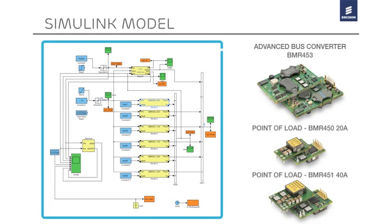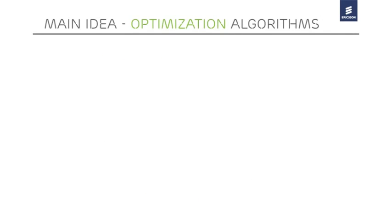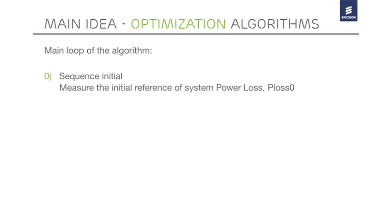The optimization algorithm is very complex and contains a lot of sub-iterations that we will not describe in detail, but to simplify, the master loop of the algorithm operates like this. The first initial sequence is to take a snapshot reference of the system, which usually is taken during the power-up, returning a power loss value that we define in this model as PLOS0.